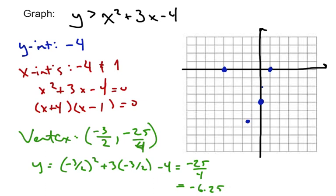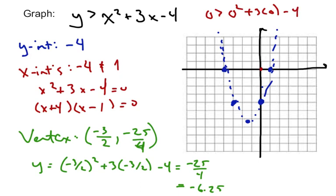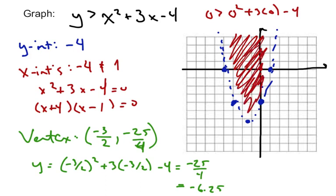We can also plot an additional point using the axis of symmetry for a more accurate graph. Remember, now we're graphing an inequality. Just like with linear inequalities, we found where the parabola is. Now we need to decide: solid line or dotted line? Since this thing is strictly greater than — not equal to — we use a dotted line. Then we decide which side to shade by picking an easy test point like (0, 0). Is 0 greater than 0 squared plus 3 times 0 minus 4? Is 0 greater than negative 4? Yes it is. So everything in that region is going to be a solution to our graph.